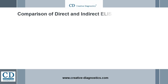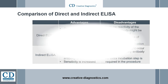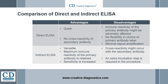Comparison of direct and indirect ELISA. Direct ELISA is quick — only one antibody and fewer steps are used, and there is no cross-reactivity of secondary antibody. Indirect ELISA is versatile because many primary antibodies can be made in one species, and the same labeled secondary antibody can be used for detection. Maximum immune reactivity of the primary antibody is retained because it is not labeled, and sensitivity is increased because each primary antibody contains several epitopes that can be bound by the labeled secondary antibody, allowing for signal amplification.